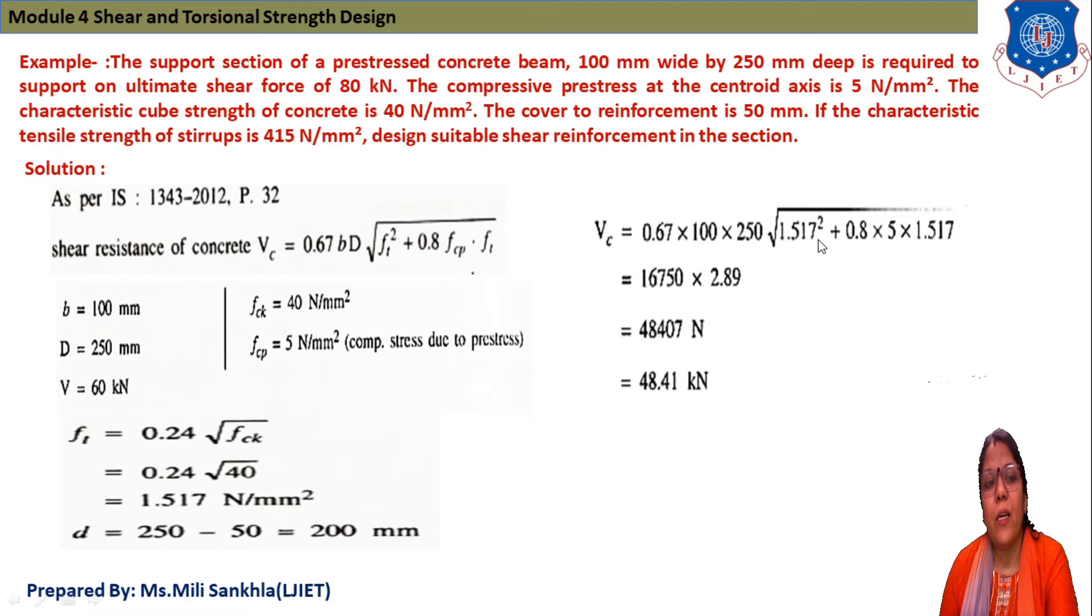Vc = 0.67 × 100 × 250, then ft according to the equation is 0.24√fck = 0.24√40 = 1.517 N/mm². Put here 0.8, then fcp equals 5 and 1.517 squared. After solving, we get 48.41 kN. Then d = 250 - 50 = 200 mm.